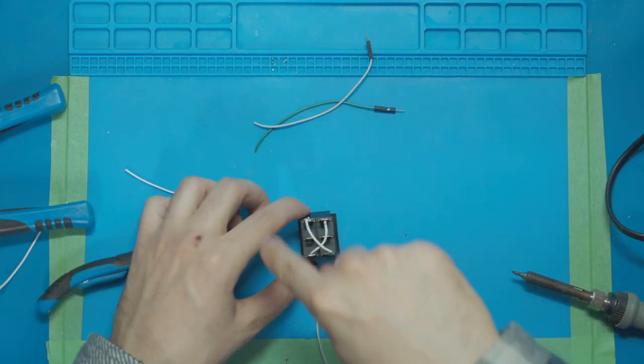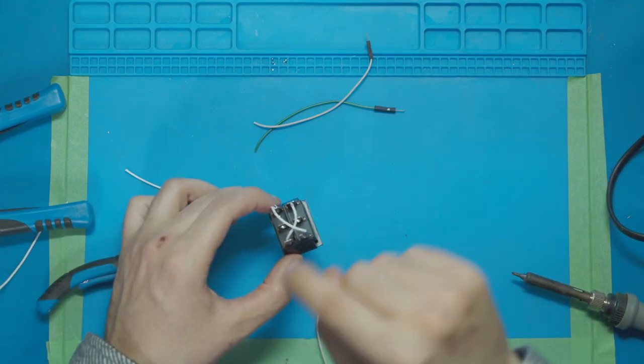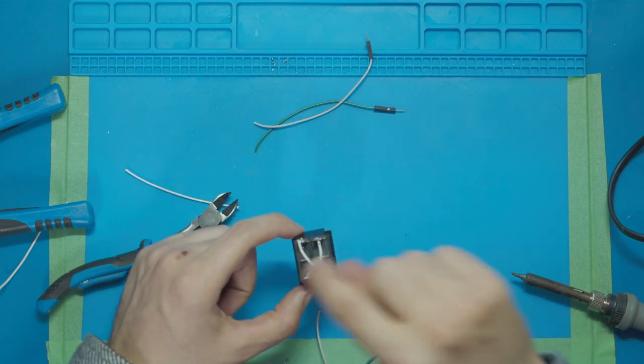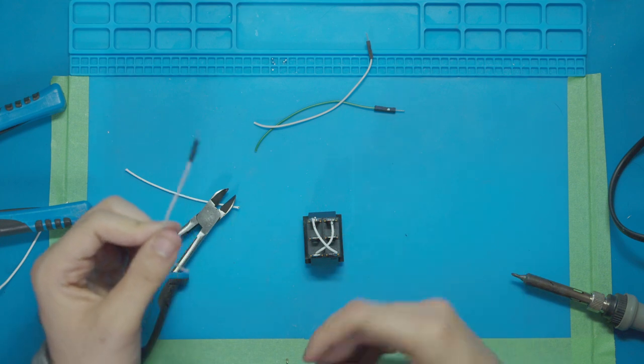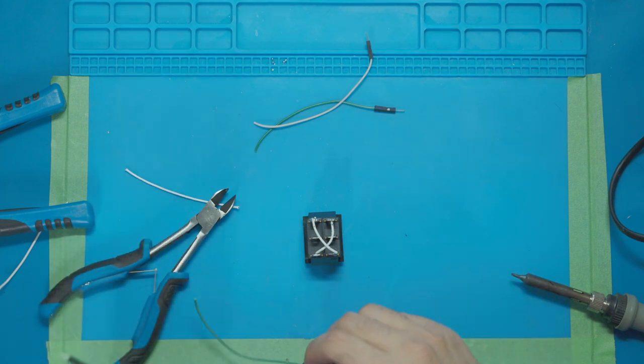All right, so we did our cross pins which is one to six and two to five. Now we need to do our inner ones which are going to be the power supply, which I'm just going to do as green and white. Green for power, white for ground.